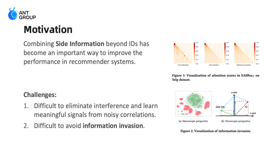First, we'll talk about the motivation. Combining side information beyond IDs has become an important way to improve performance in recommender systems. However, existing side info fusion methods still face the following challenges. First, it's difficult to eliminate interference and extract meaningful signals from noisy correlations.